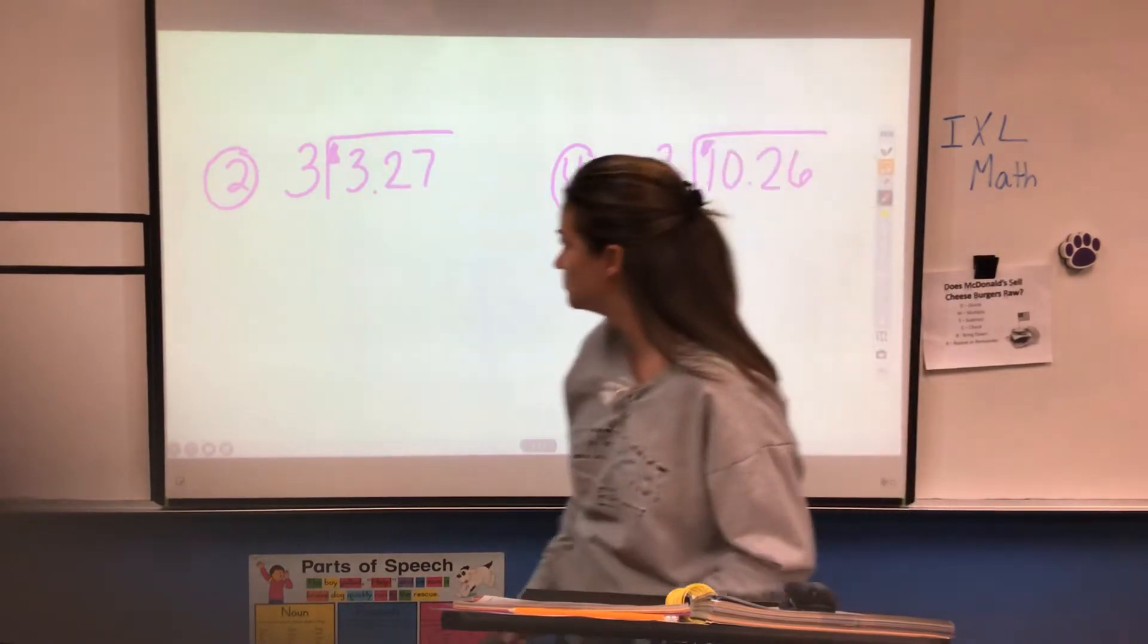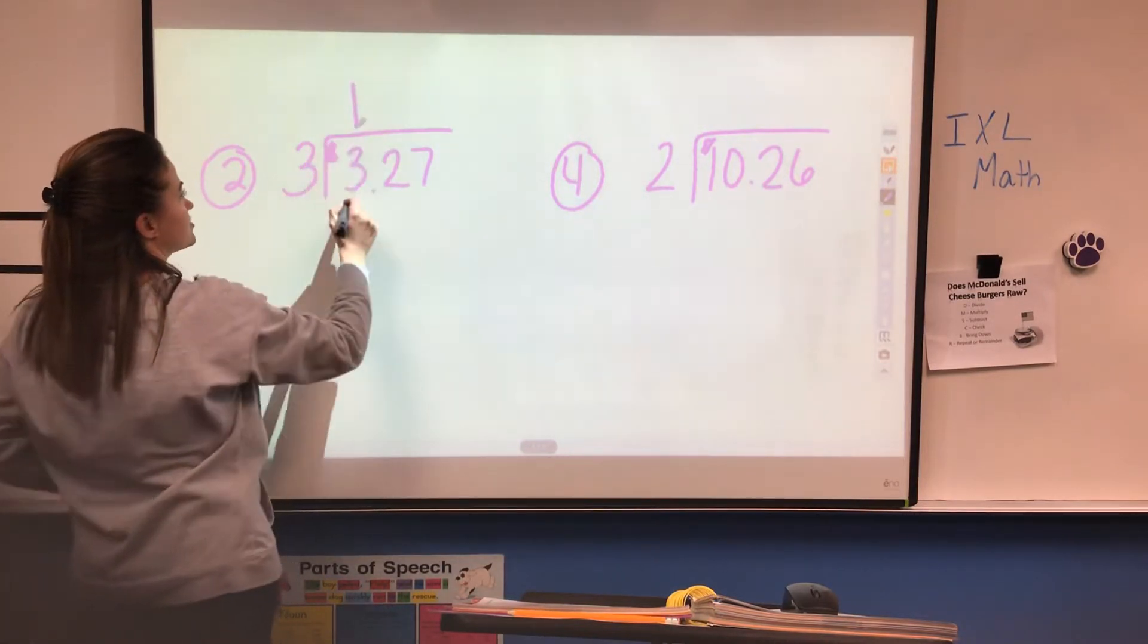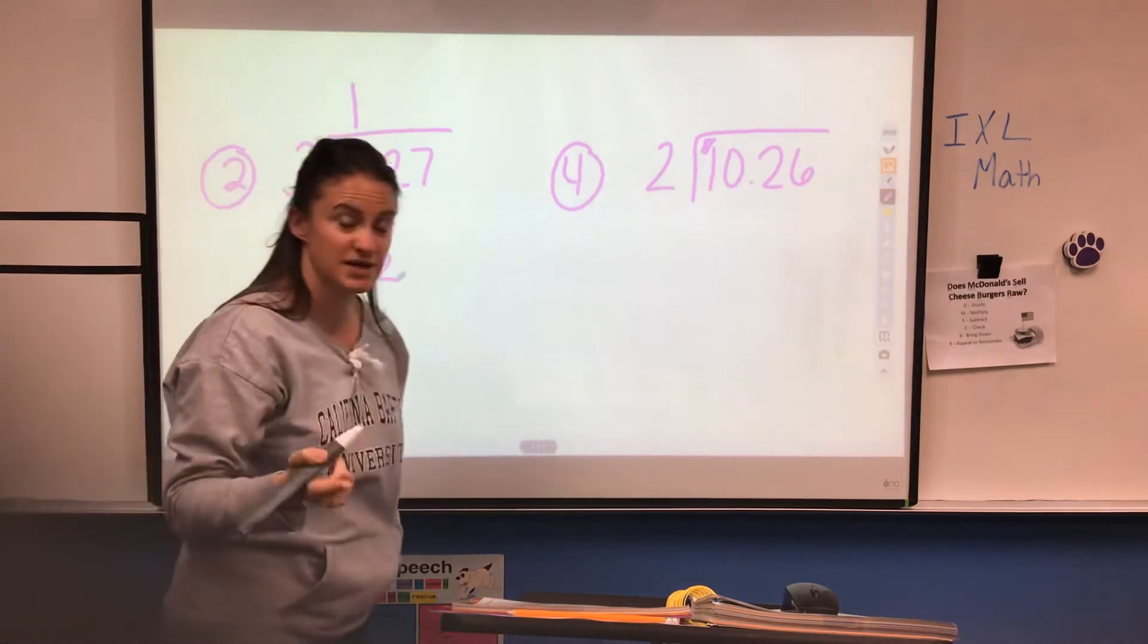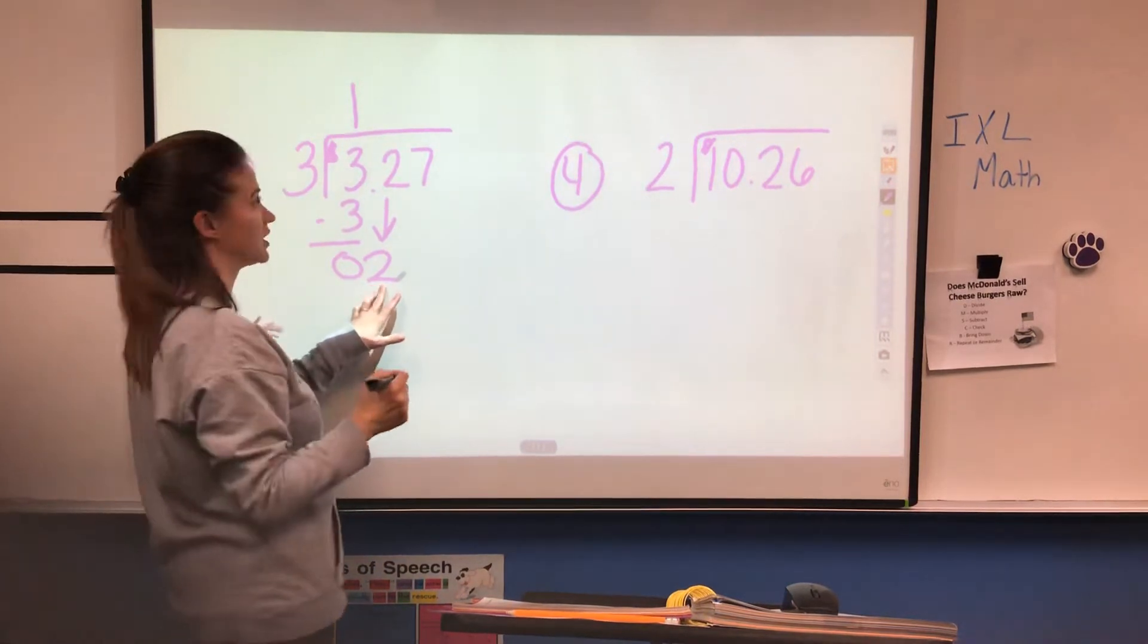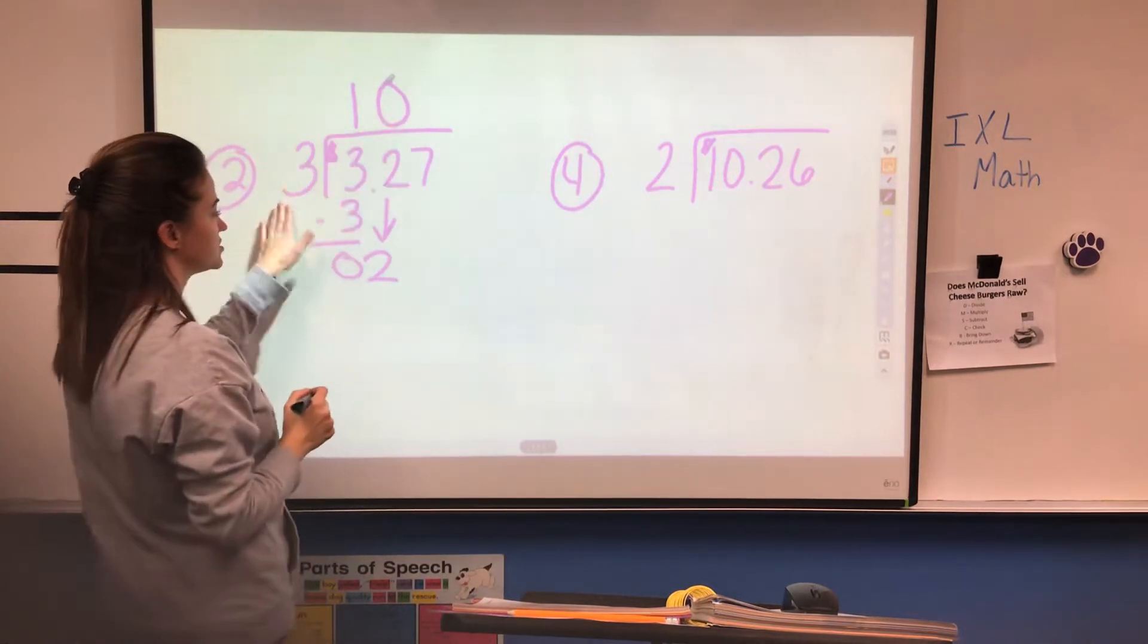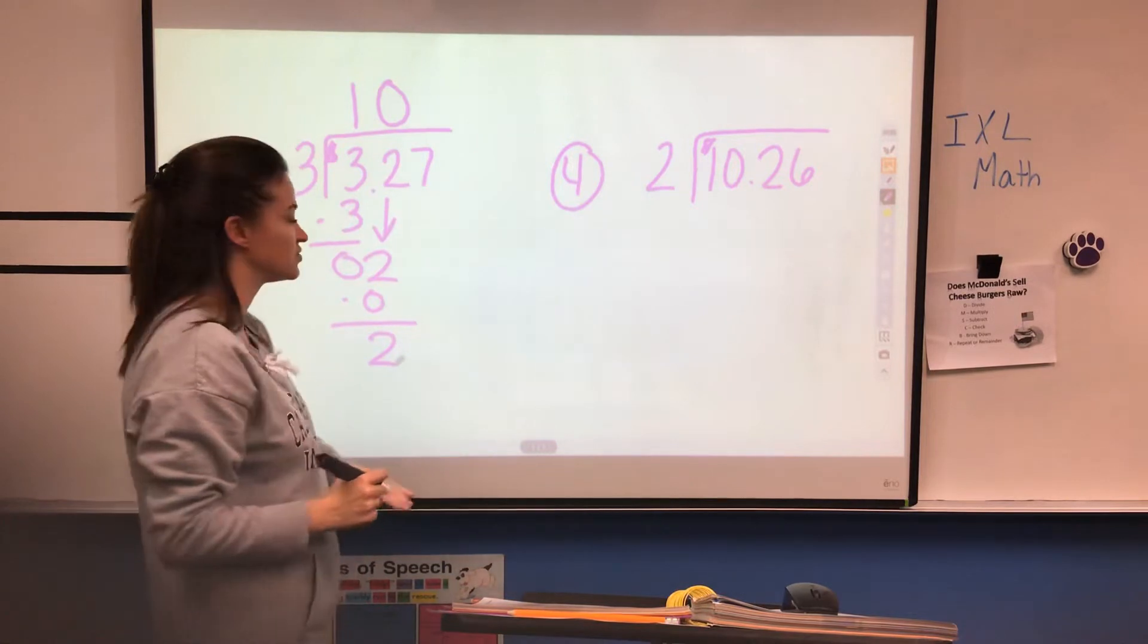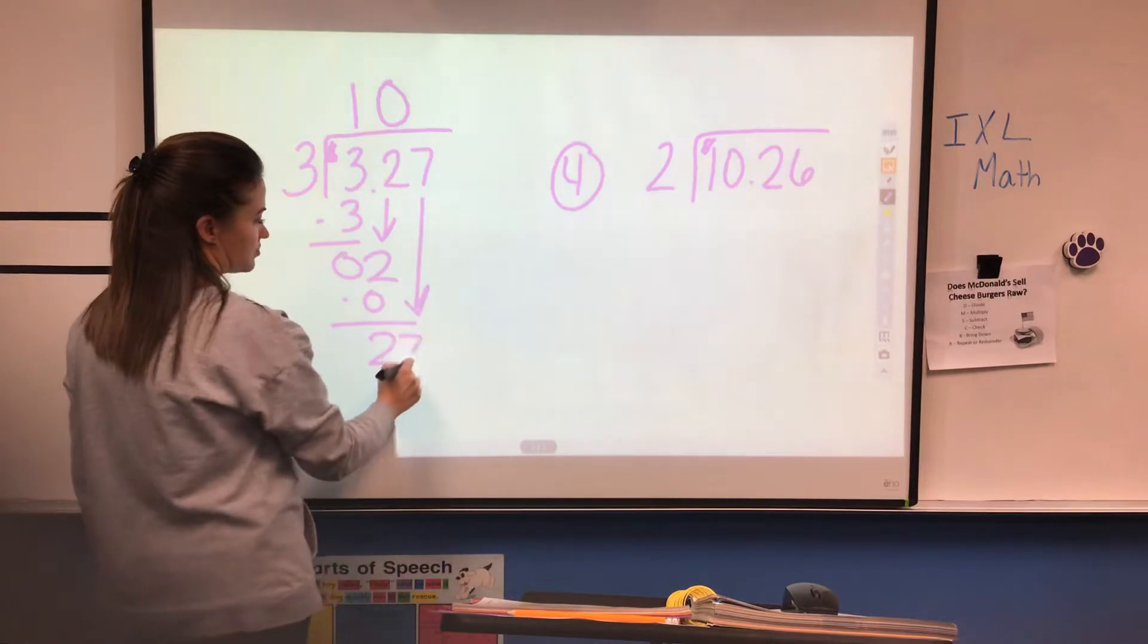First we're going to do number two. Three gets divided into three one time. One times three is three. Don't forget our steps. We're going to bring down our two. But here is something we haven't encountered yet. Can three be divided into two? No, it can't. So you're going to put a zero up here. Some people will still like to work out the problems. They'll say zero times three is zero and bring down their two. You can still continue with the steps if you'd like. Either way, you're going to end up with 27.